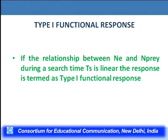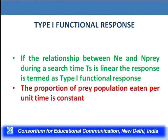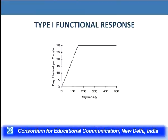Type 1 functional response is basically a linear response — it describes the relationship between N_e (the predation rate) and N_prey during search time Ts. The proportion of prey population eaten per unit time stays constant, then the rate cannot increase linearly after a certain point — it becomes a plateau phase. This is characteristic of passive predators and filter feeders, which are physiologically limited in how many individuals they can take up at a given time, or passive predators like spiders whose prey get stuck to their webs.